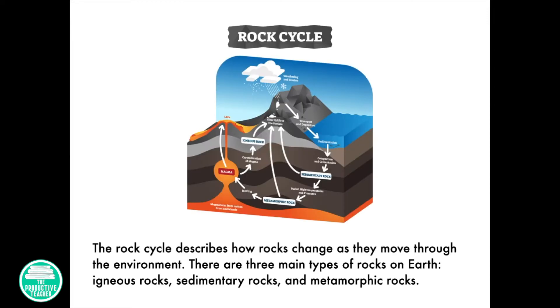The Rock Cycle by Kate O'Donnell. The Rock Cycle describes how rocks change as they move through the environment. There are three main types of rocks on Earth: igneous rocks, sedimentary rocks, and metamorphic rocks.